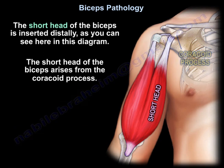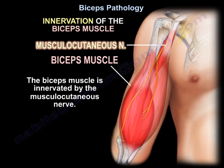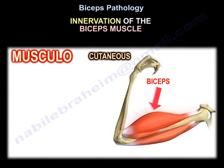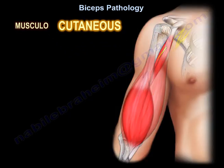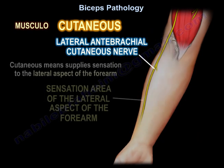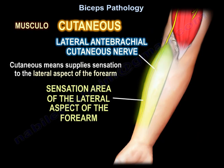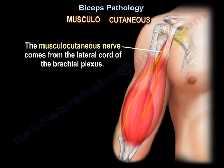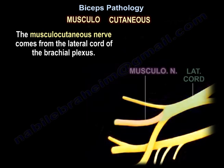The short head of the biceps arises from the coracoid process. Innervation of the biceps: the biceps muscle is innervated by the musculocutaneous nerve. The cutaneous component supplies sensation to the lateral aspect of the forearm. The musculocutaneous nerve comes from the lateral cord of the brachial plexus.